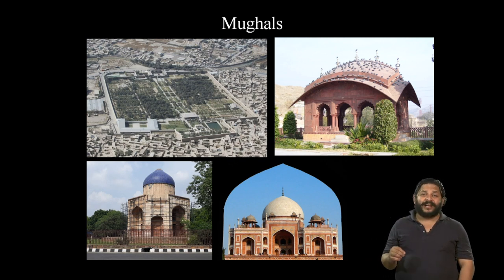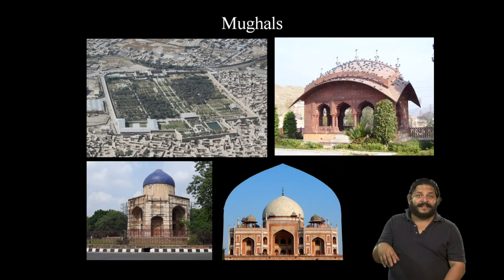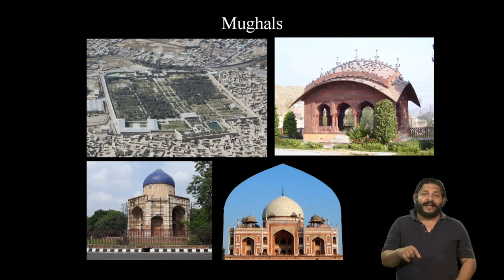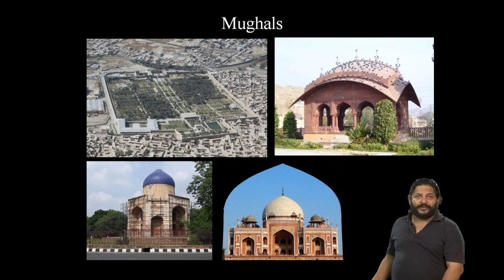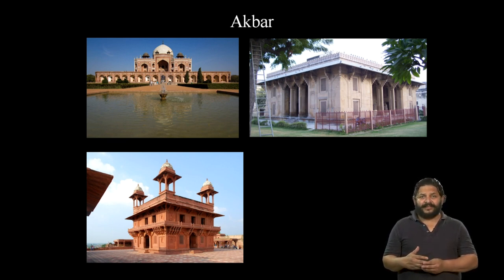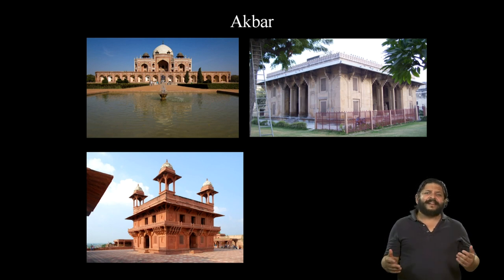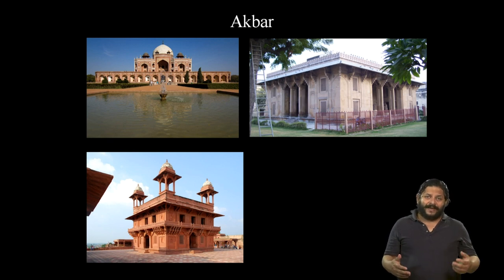Mughal buildings after Jahangir are incomplete without this kind of roof. These chhatris, the baluster columns and the multifoil arches are all elements slowly being introduced. If we first consider Akbar, he is a very innovative ruler who tries innovation not just in architecture but also in music, in religion and in other arts. A lot of his buildings look very different from each other because as he is conquering parts of central India, western India, Rajasthan, Gujarat and Madhya Pradesh,